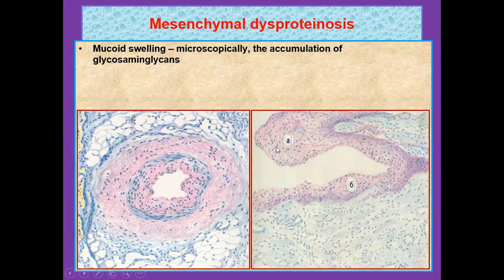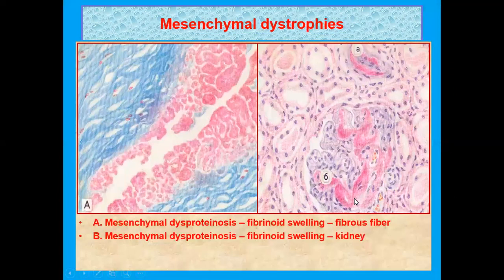Here are the A and B pictures. In picture A, you can see mesenchymal dystrophy with fibrinoid swelling and fibrous fiber. In the second picture you can see fibrinoid swelling in the kidney.